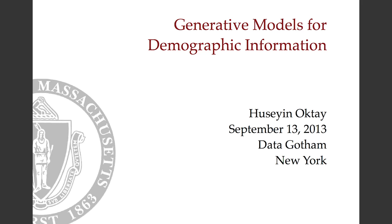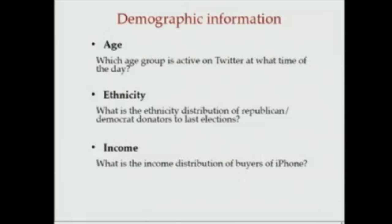Hello. I'm here to talk about generative models for estimating demography information. Whether you are a social scientist, marketer, or policymaker, or even just a person who is interested in data, you might be interested in questions like: what is the most active age group on Twitter at prime time? Or what is the ethnicity distribution of voters who donated to the Republican Party during last elections? Or what is the income distribution of buyers of the iPhone? Although these questions are interesting, most of the time the data required to answer them is not available. I want to argue that generative models can provide a powerful framework to answer these questions fairly accurately.